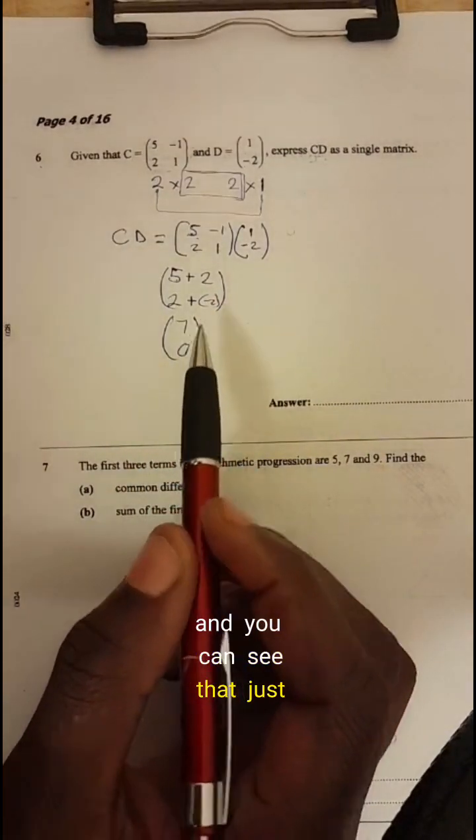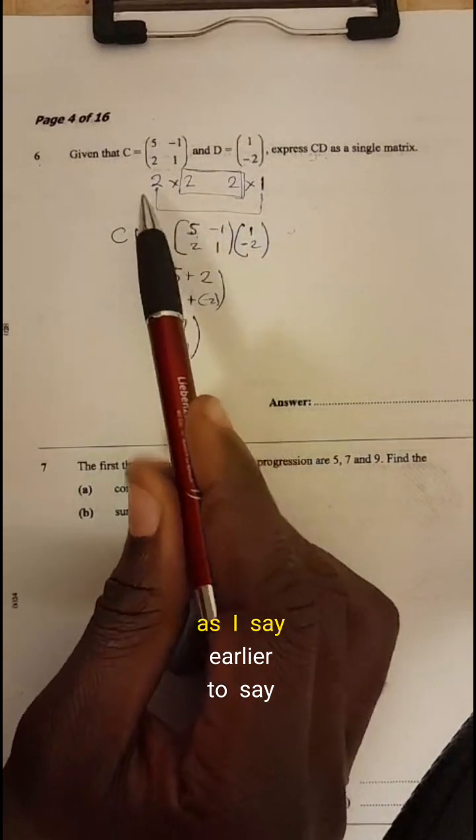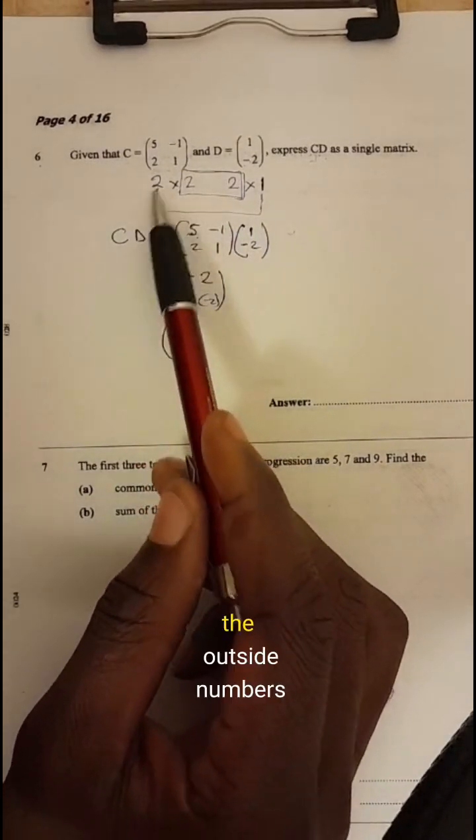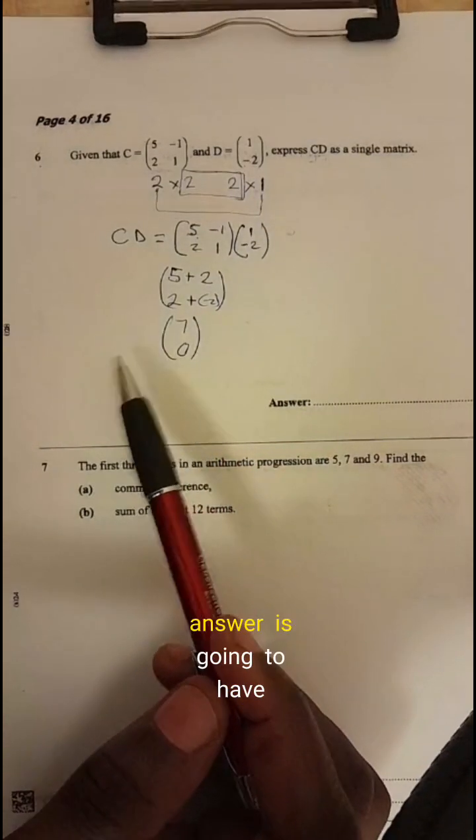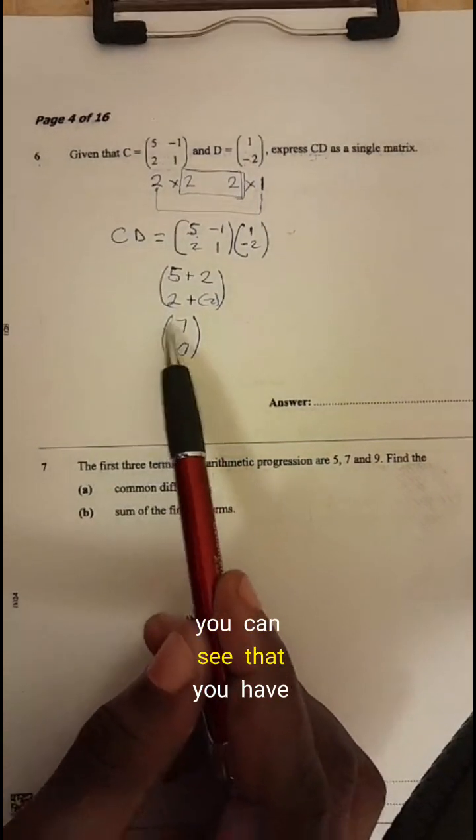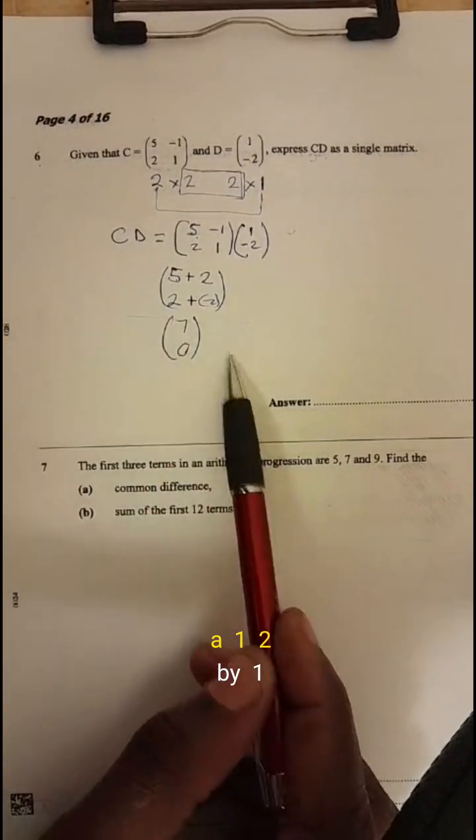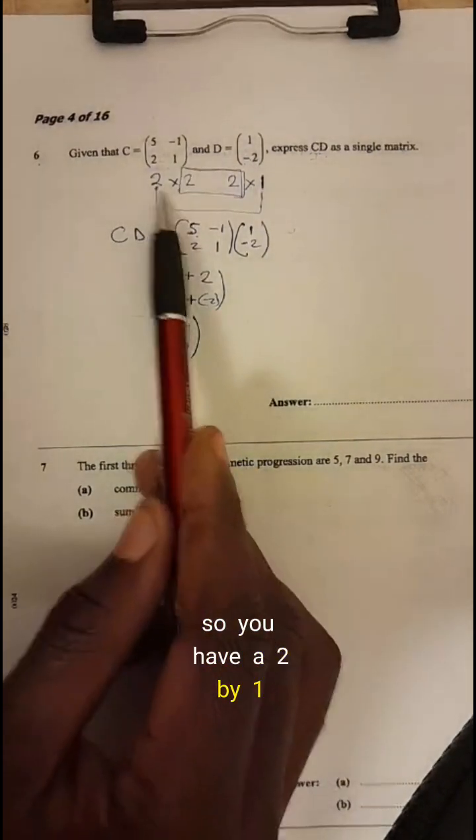And you can see that just as I said earlier, the outside numbers would tell you the order about the order that your answer is going to have. So you can see that you have a two by one. So you have a two by one matrix.